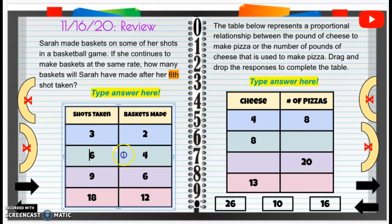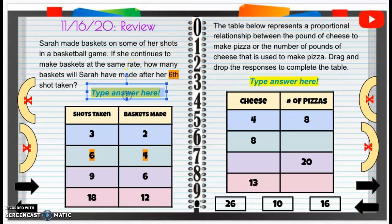So let's look over here. If she took six shots on the hoop, the basket that she made, the number of baskets made is four. So that's going to be four. So our answer here is four baskets.